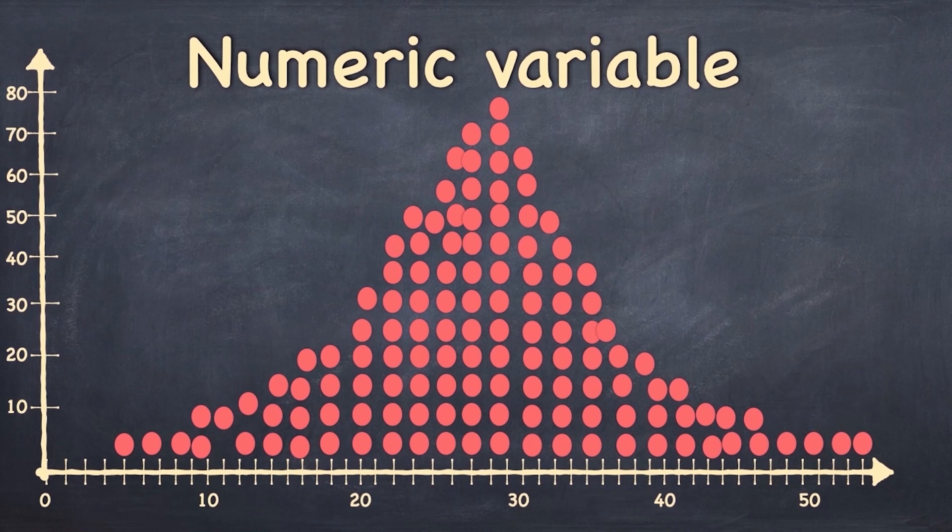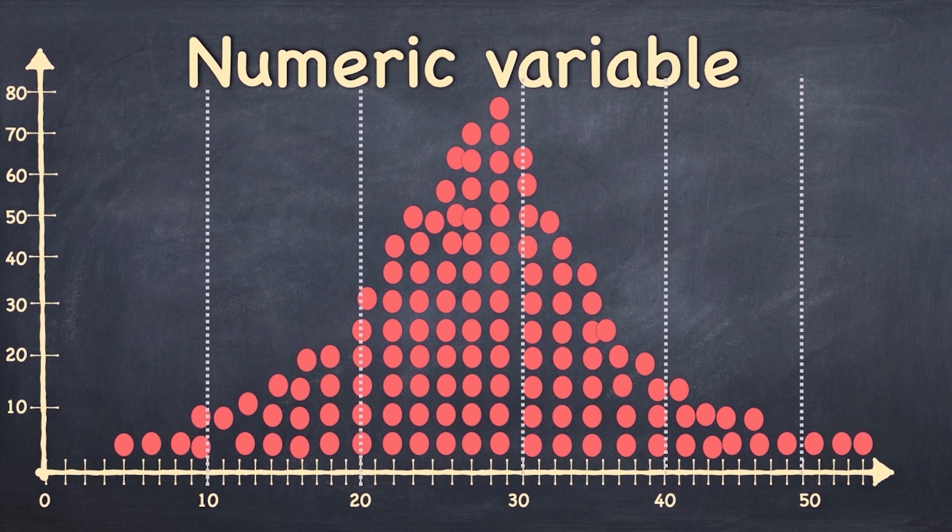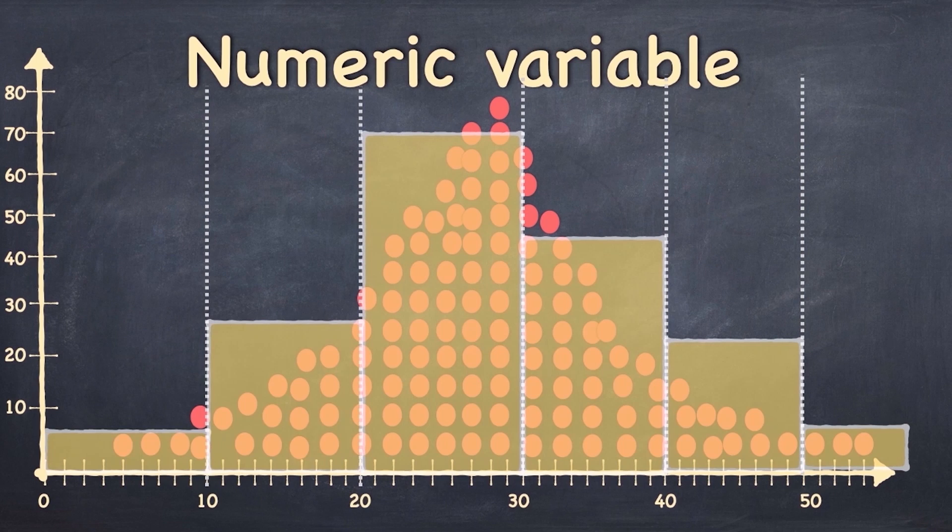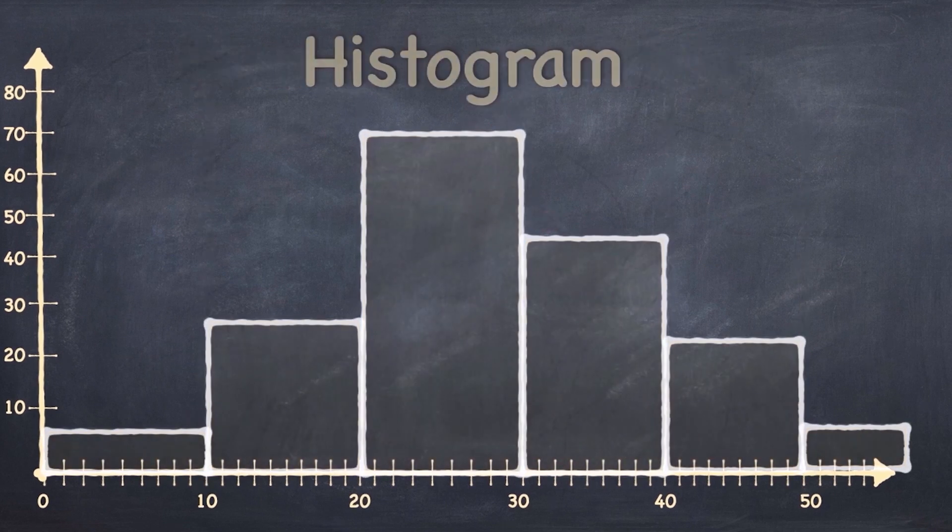Now the first way that we can visualize the distribution of a numeric data set is by imagining buckets that represent different intervals along the x-axis, and you can choose how big the buckets are. Let's say in this case we're going from 0 to 10, 10 to 20, 20 to 30, and so on. And then by counting up how many observations fall into each of those buckets, we can create what we call a histogram.